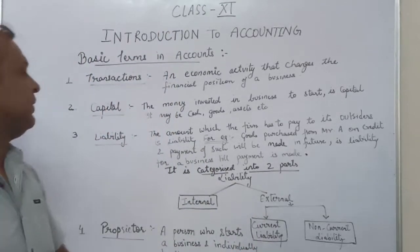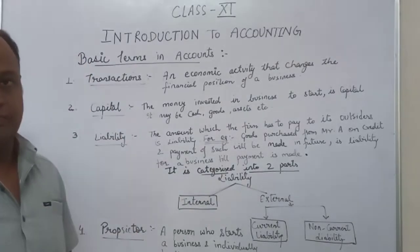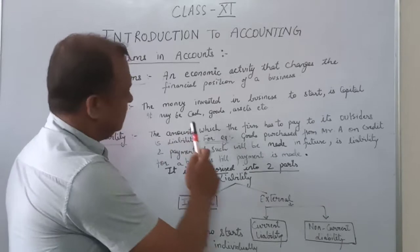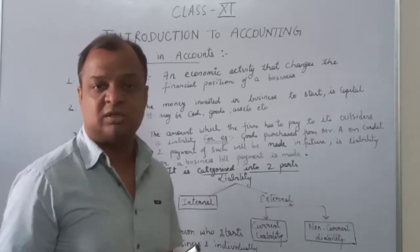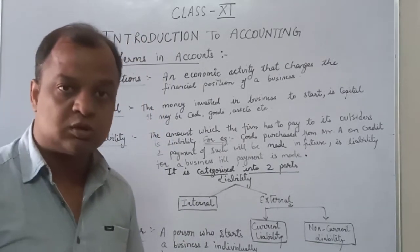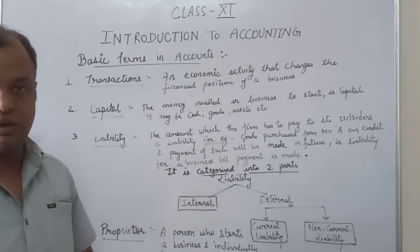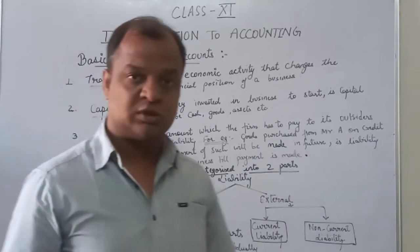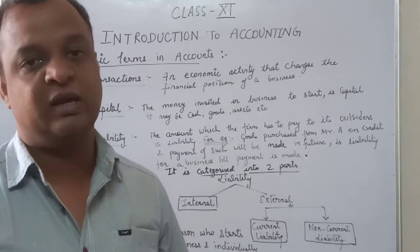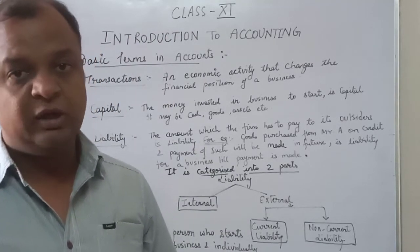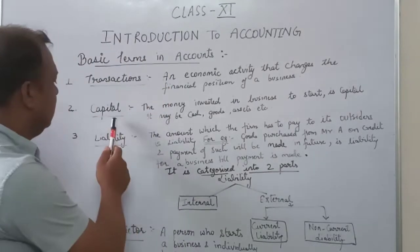Is it clear? Okay. Now let's see the second term, which is capital. Capital is the money invested in a business to start it. Any money which is introduced to start is capital. For example, A is a person who wants to start a business and he introduces rupees 5 lakh in business. So the money introduced by A — rupees 5 lakh — is treated as capital.